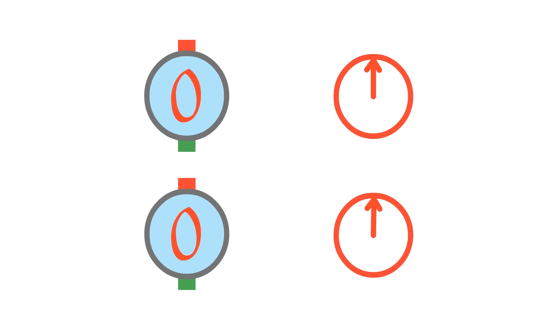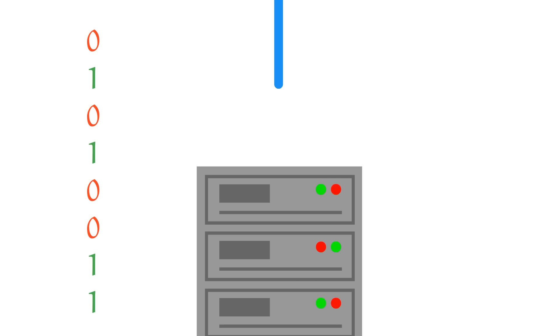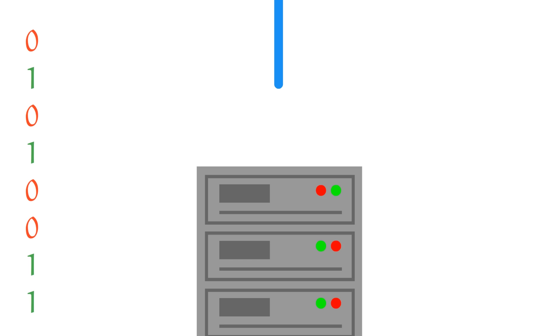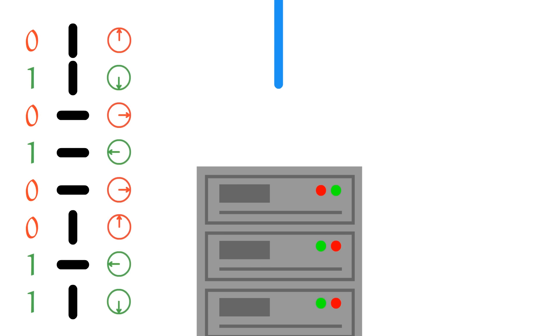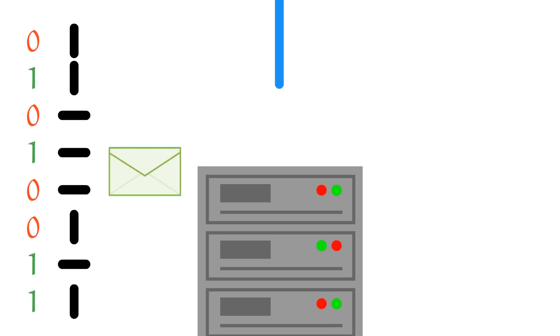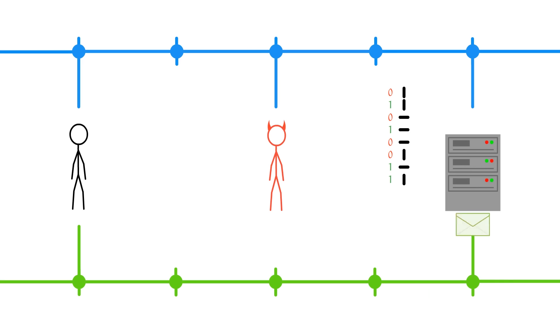Now, all of this might look really useless at first, but we can actually use these qubits to generate keys and detect if someone is trying to eavesdrop. Here's how it could work. The server generates a random string of 1s and 0s to use as a key. The server encodes these bits into qubits by randomly choosing a vertical or horizontal orientation. These qubits are then sent down a line that supports transmission of qubits, and you receive them.